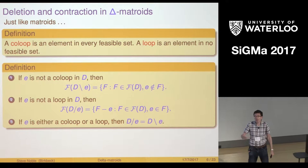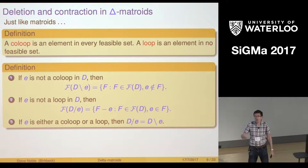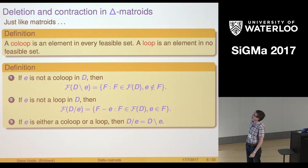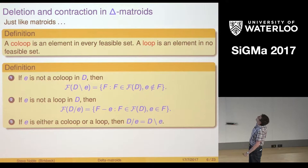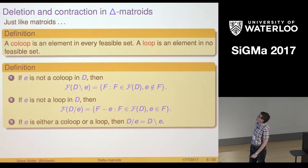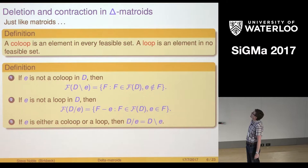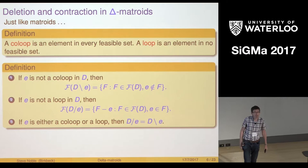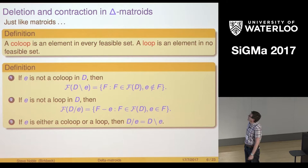Some more operations: deletion and contraction. They work exactly as they do for a Matroid if you phrase things in terms of the bases. We could define a co-loop as something in every feasible set, a loop something that's in no feasible set. I delete something that's not a co-loop by throwing away the bases that contain that element. I contract something that's not a loop by taking the bases that do contain that element and removing that element from them.